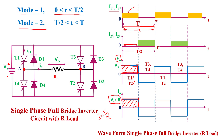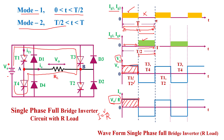Mode 2: time interval T/2 to T. In this interval, we remove the gate pulse from T1 and T2, so they turn off and behave like open switches. We provide gate triggering pulses to thyristors T3 and T4, so they get turned on and behave like closed switches. Current now follows the path: supply voltage, T3 thyristor, load, T4 thyristor, and back to supply.